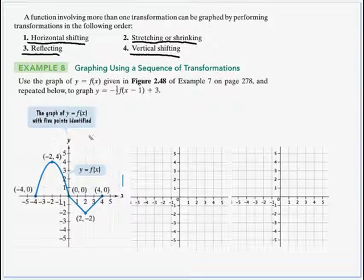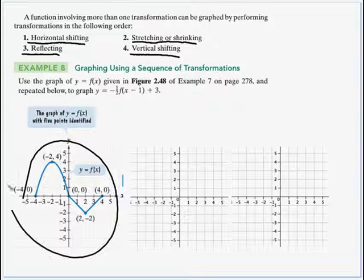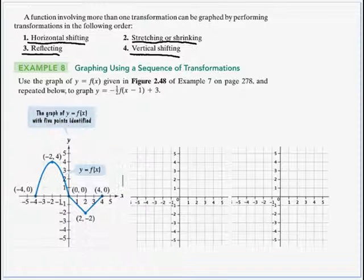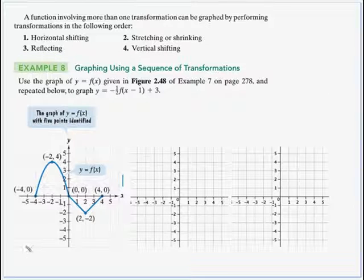So we're going to use the graph given down here. This is our f of x graph. And we're going to use that to graph y equals negative a half f of the quantity x minus 1 plus 3. So we just got to do this step by step. We have our starting point is this graph, and we just want to work on it sort of from the inside out.